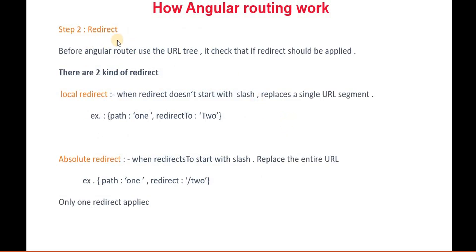Now when we redirect — before the Angular router uses the URL tree, it checks whether a redirect should be applied and what kind: a local redirect or an absolute redirect. A local redirect means when the redirect doesn't start with a slash, it replaces a single URL segment. An absolute redirect means when the redirect starts with a slash, it replaces the entire URL.